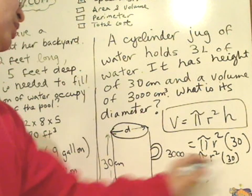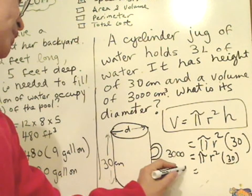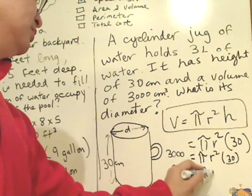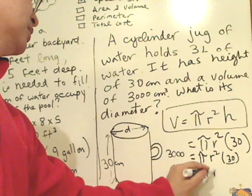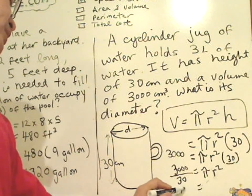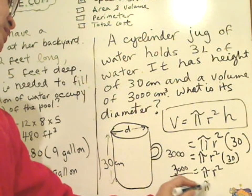The first thing to do is, you see that 30? You bring it over by dividing into 3,000. So we have 3,000 divided by 30. That will give you 100.